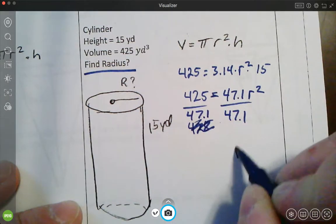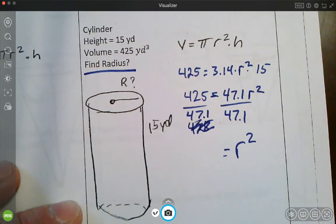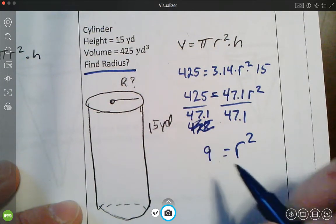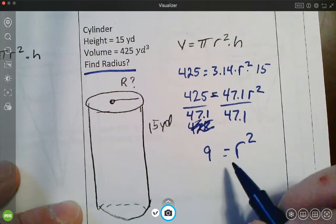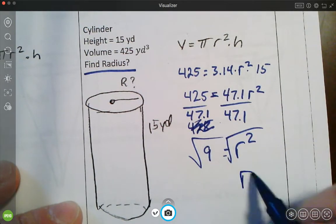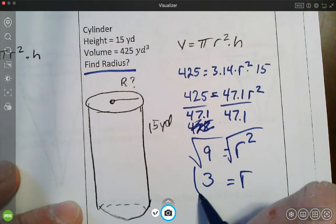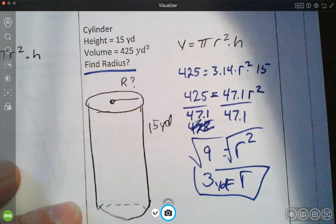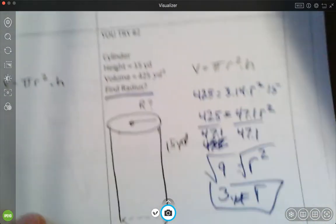Divide each side by 47.1. I get r squared. I'll check that one more time. 425 divided by 47.1. Yeah, so it's about 9 because it comes out to 9.02. So then you do the square root on both sides to solve for r. You get the radius is equal to 3 yards for that one. So that one came out much nicer than you try number one.